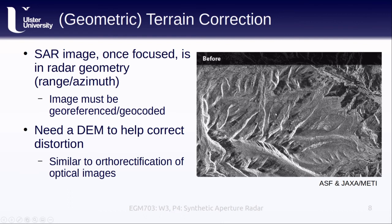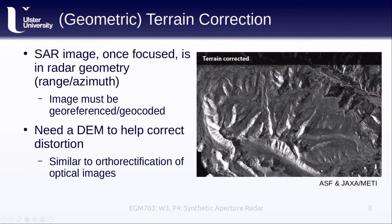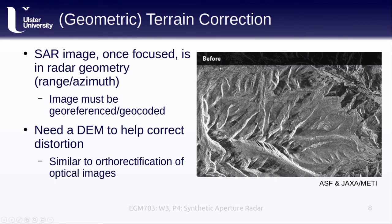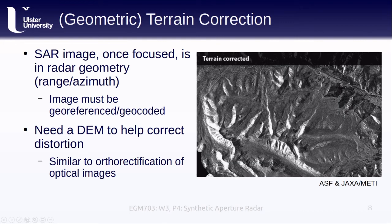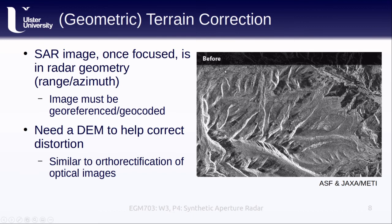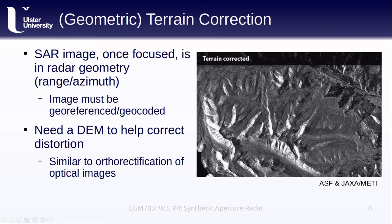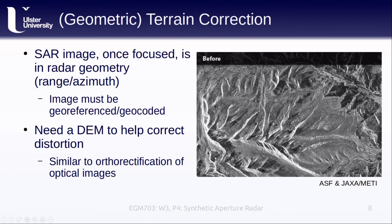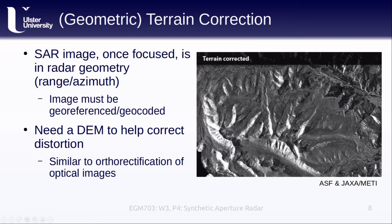This process works similarly to the orthorectification of optical images seen in previous modules — we're basically trying to take each pixel and map it to its correct location on the Earth's surface, as if we were seeing it on a map. We see an example of this courtesy of the Alaska Satellite Facility, using data from the Japanese Aerospace Exploration Agency. The before image shows what the image looks like when pixels correspond to range and azimuth distance, and the after image shows what this looks like when they are mapped to the correct locations. We can see that slopes facing the sensor are bright, and dark shadow areas appear in the northeast part of the image where steep canyon walls are not seen by the sensor.